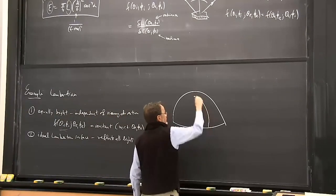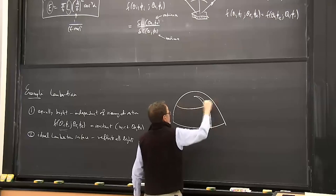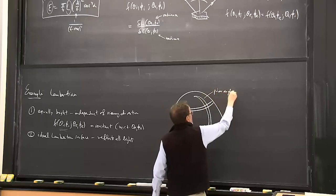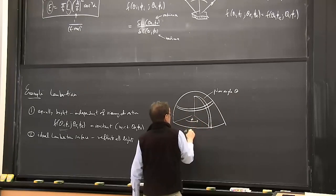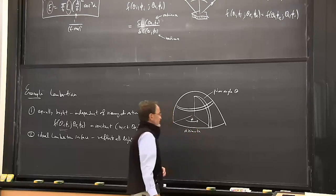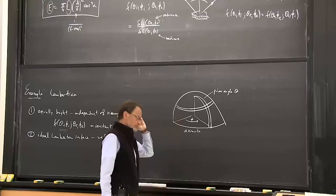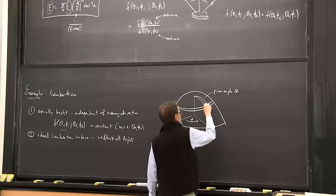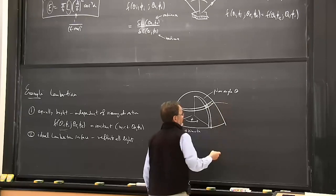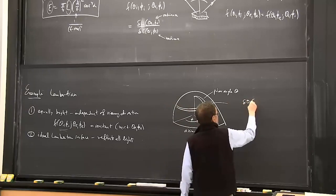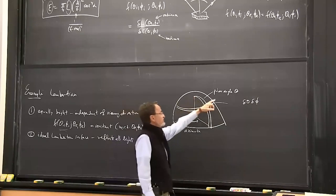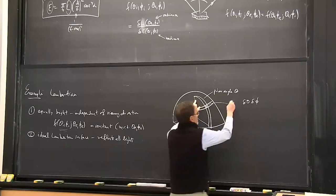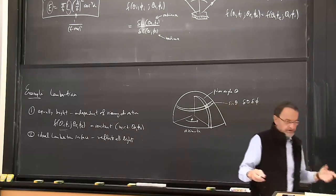We use the polar angle and also an azimuth angle as the two parameters to talk about possible directions. When we perform the integral, we need to take into account the area of this patch, which involves delta theta and delta phi. It's also going to get smaller the closer we get to the pole, and since we're measuring theta from the pole, this would be sine theta.